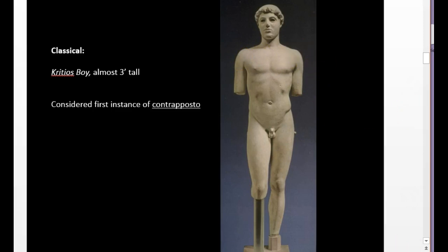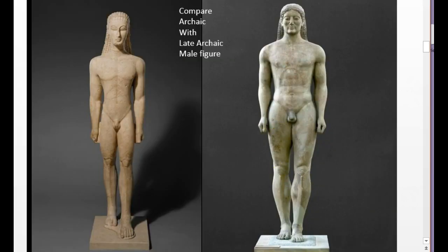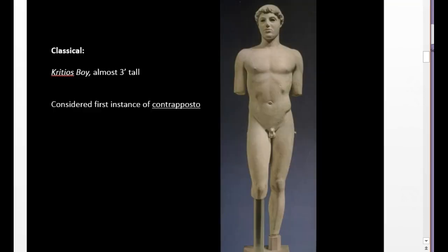Sometimes, if we had the arms — they fell off at some point in its history — it would show one arm up, one arm down, and maybe the head cocking one way. So the strict symmetry and stiff knees we see in the Archaic period get blown out of the water here in the Classical period, with this new confidence, naturalism, and the invention of Contrapposto.